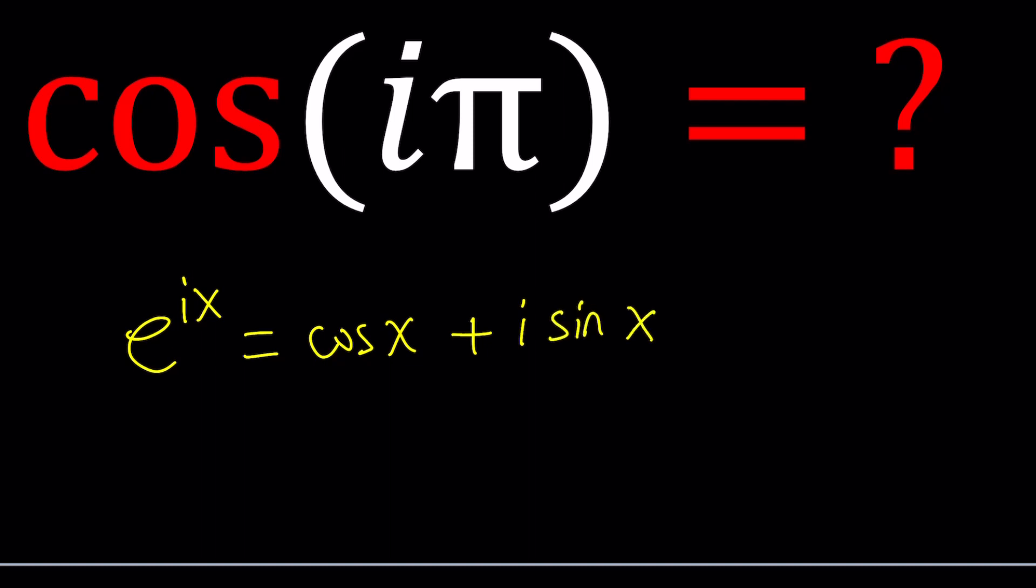Now, we're going to use this expression to solve for cosine, but we do need another equation, so we're going to do that by replacing x with negative x. So we're going to get e to the power negative ix equals cosine of negative x plus i sine of negative x.